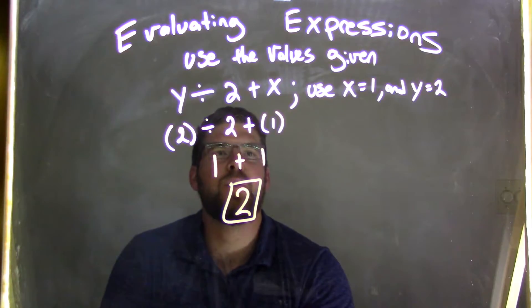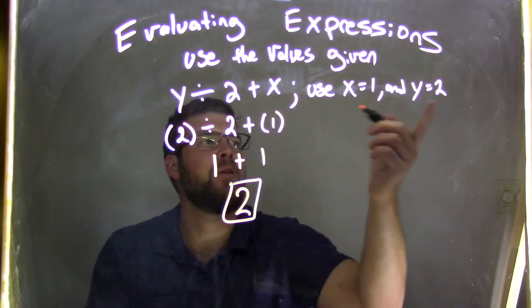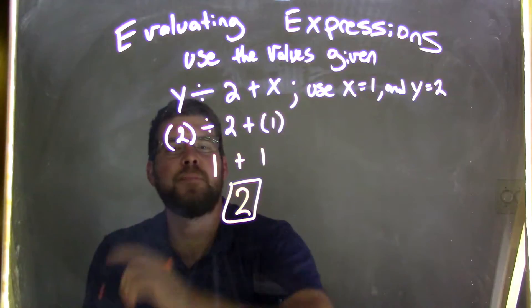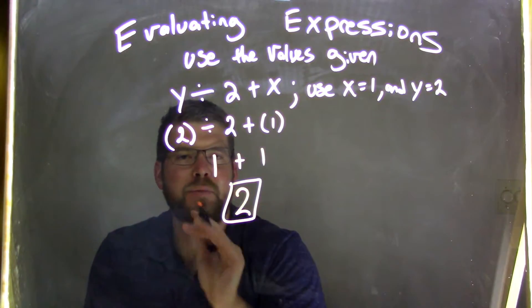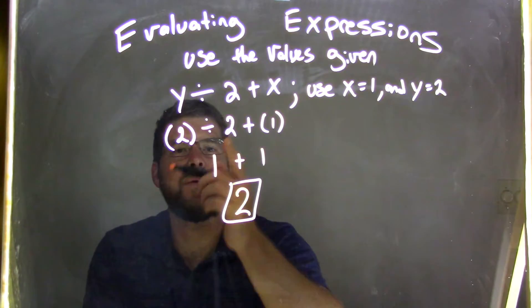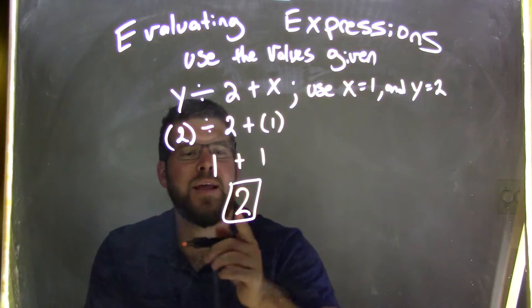So again, we started with substituting 1 in for x and 2 in for y here. Then we simplify. Because it's a simplification problem. 2 divided by 2 is 1 and then 1 plus 1 is 2.